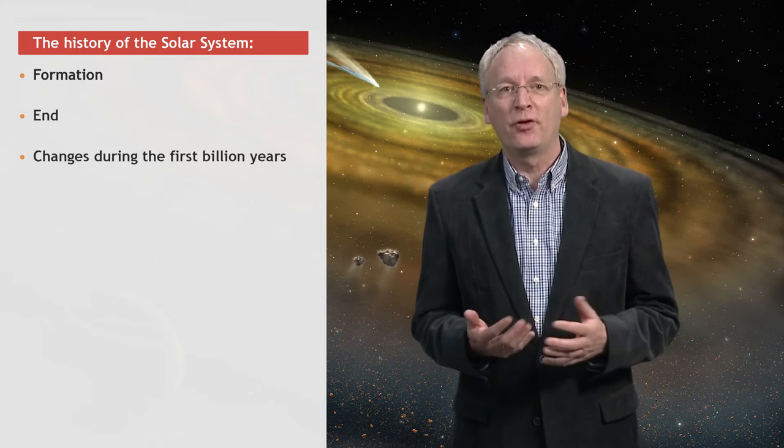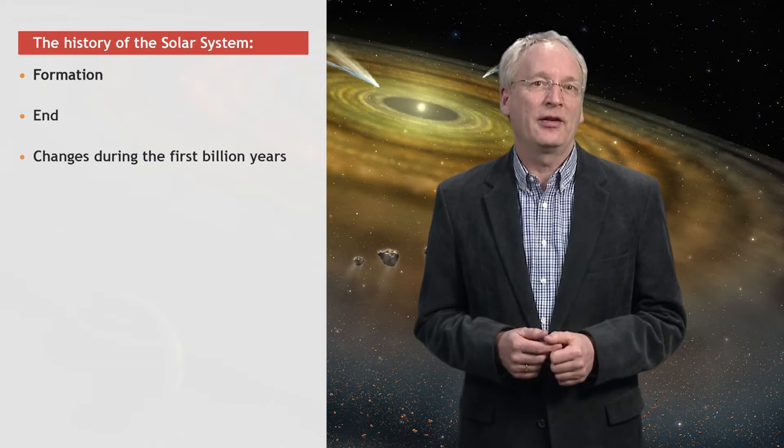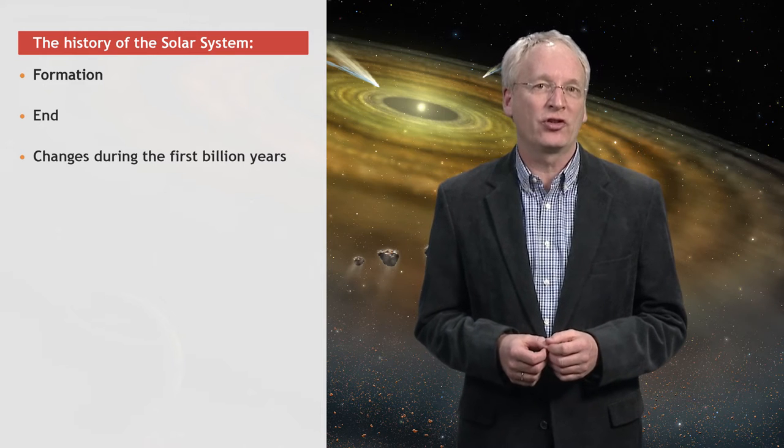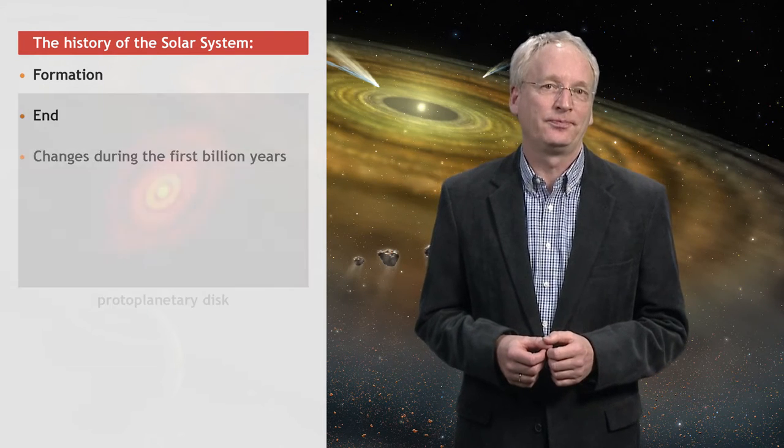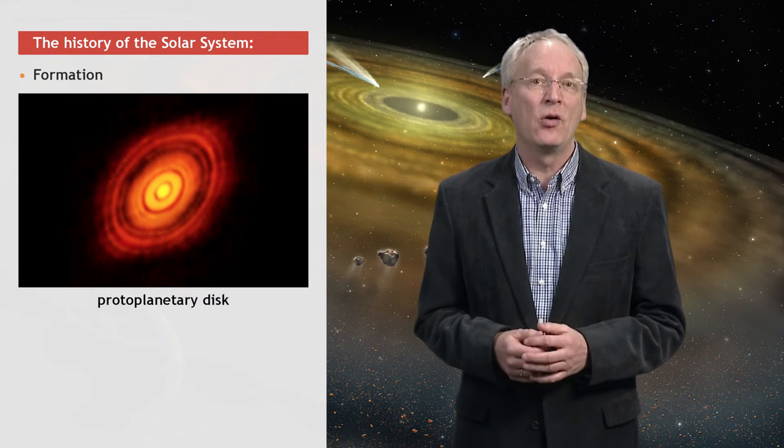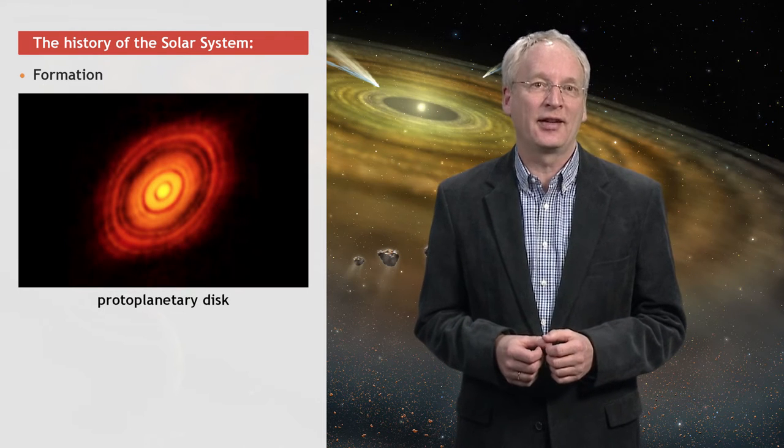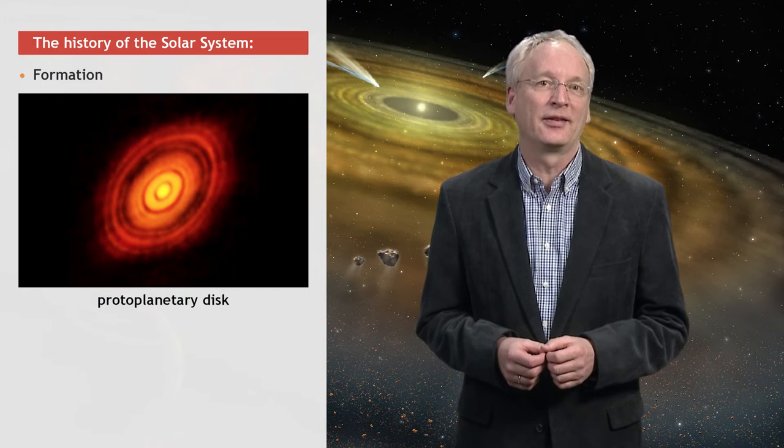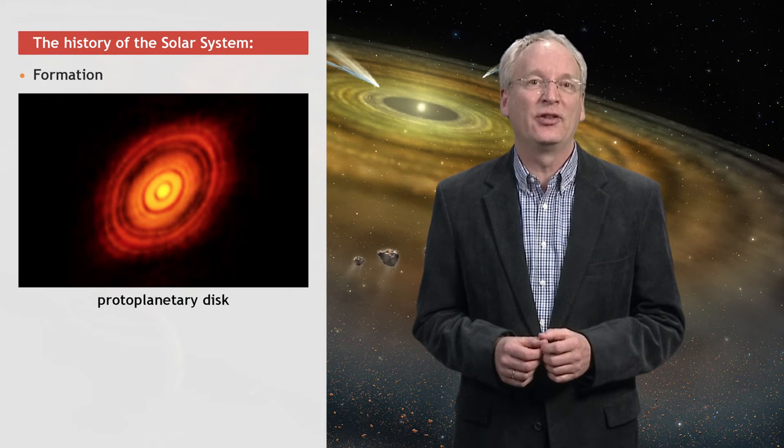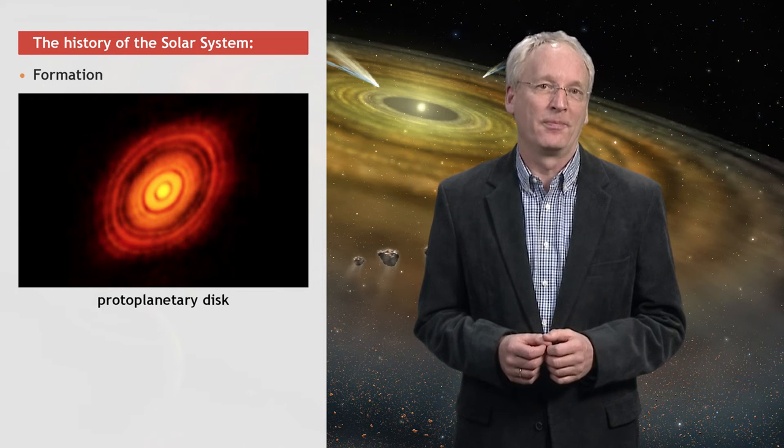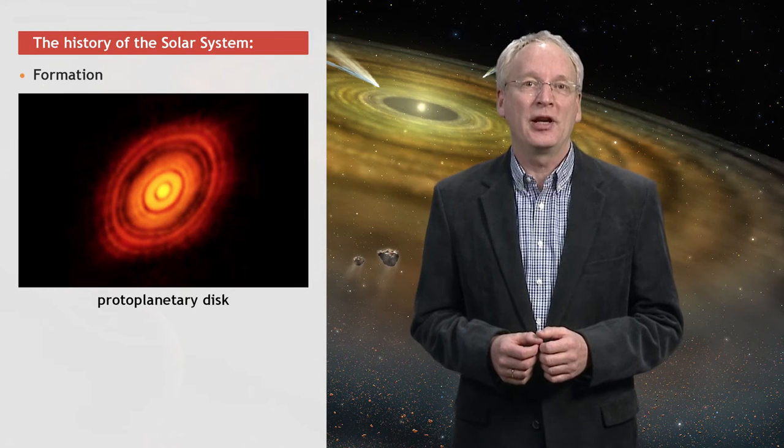When it comes to the formation of the solar system, we look at other very young stars in our vicinity and watch them form a planetary system. Astronomers have now images of protoplanetary disks that are in the process of forming planets. In some of these disks, we can even see the protoplanets as they form.